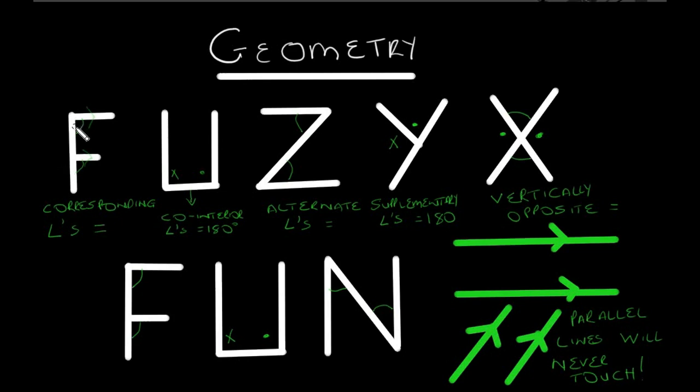So the angles are either going to be both below the line or both above the line. Now corresponding angles are equal to each other, so if that is 50, then that will be 50 as well.